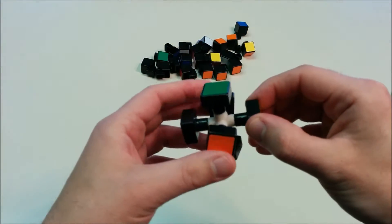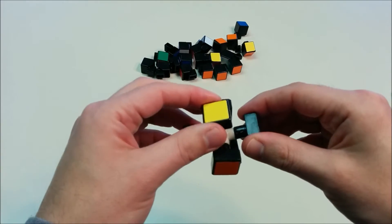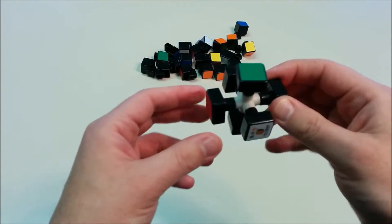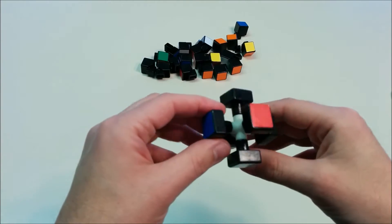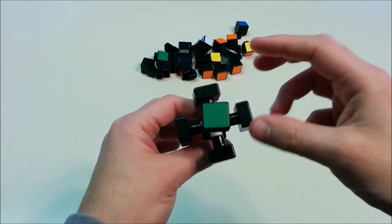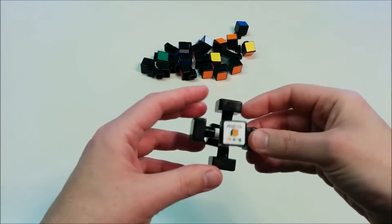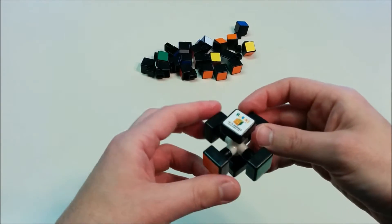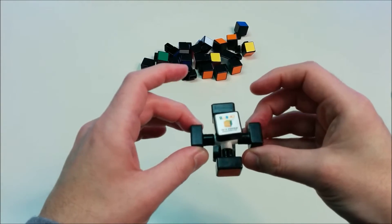So the white face will always be opposite the yellow face. The orange face will be opposite the red, and the blue face and green faces will be opposite each other. So you might be able to rotate the pieces, but they'll never be able to move into other positions.